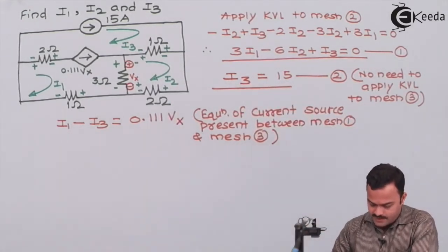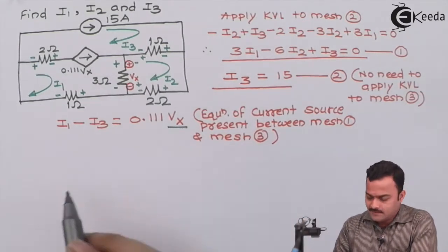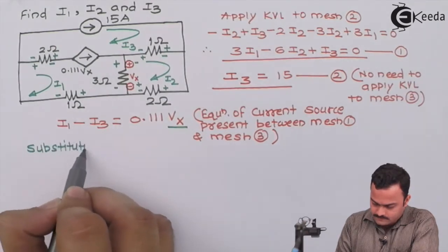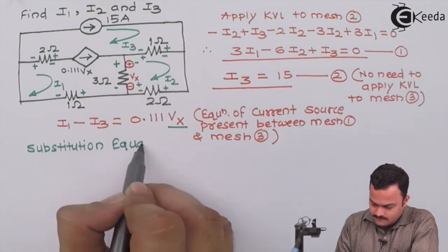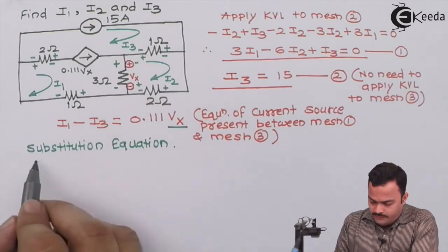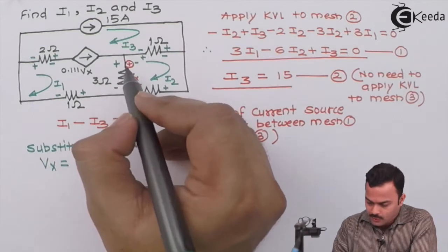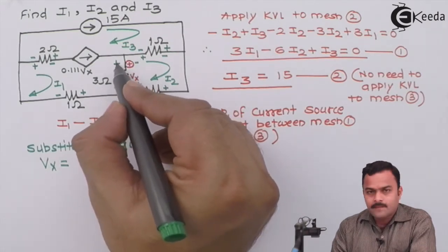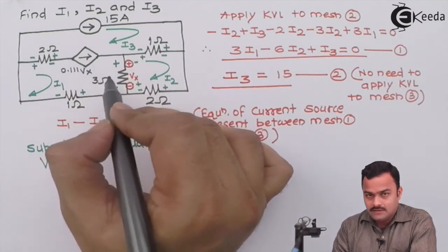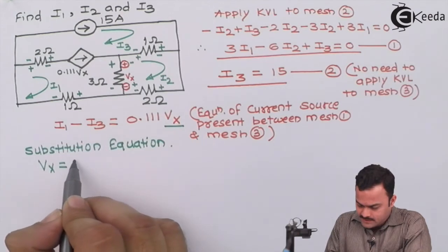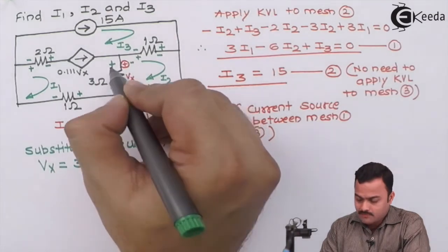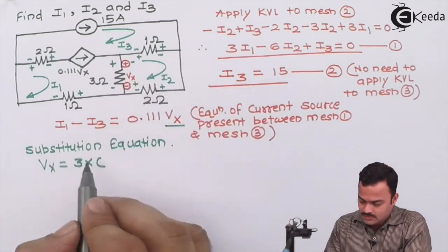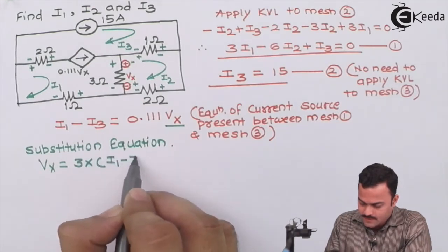Vx is a variable we need to substitute. Vx is the voltage across the 3-ohm resistor. The polarity given by the source matches the polarity created by i1, and i1 dominates over i2. So Vx = 3 × (i1 minus i2).